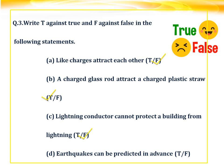c) Lightning conductor cannot protect a building from lightning — this is false, because the purpose of a lightning conductor is to protect a building from lightning. It discharges the lightning by directly transferring its charges to the earth. d) Earthquakes can be predicted in advance — this is also false, because it is impossible to predict earthquakes.